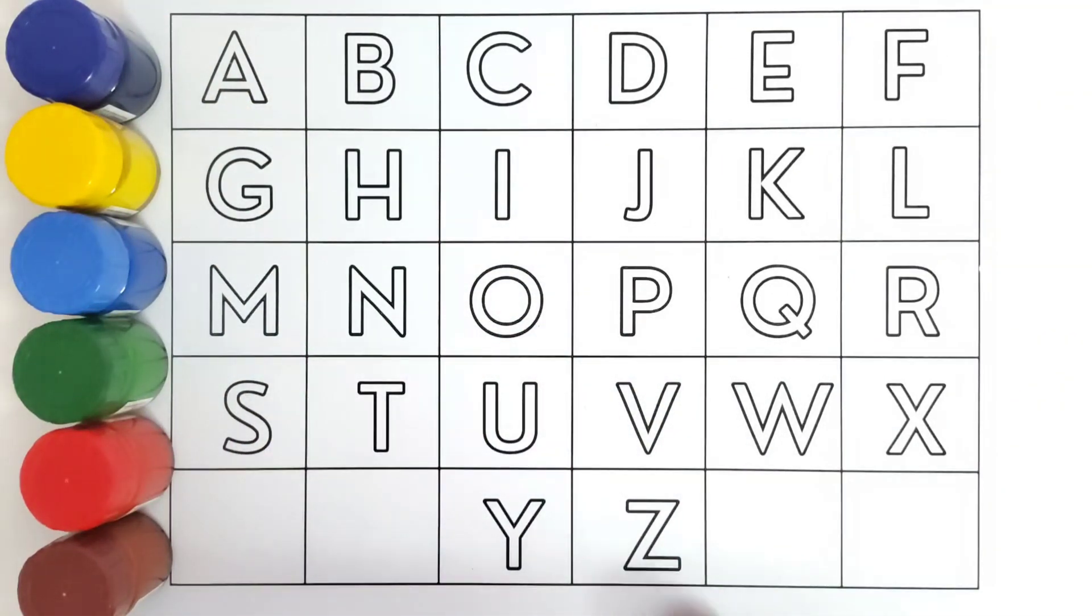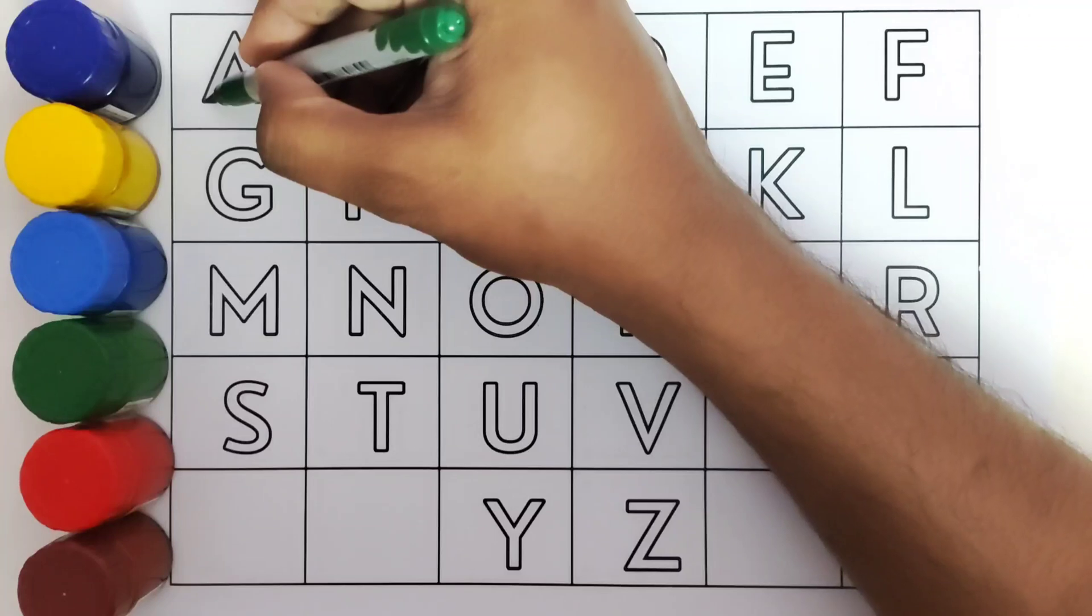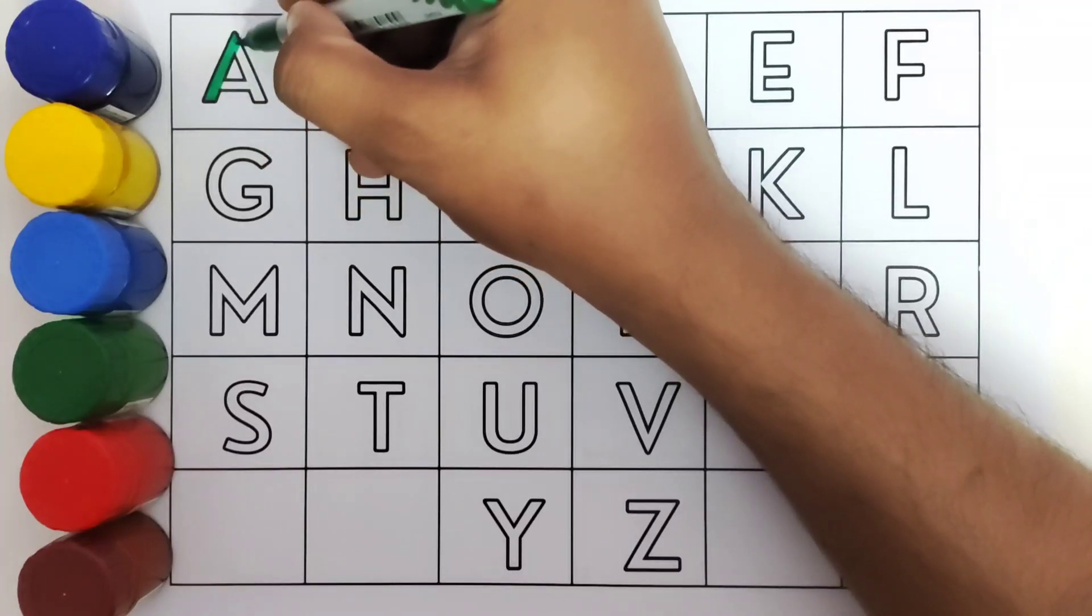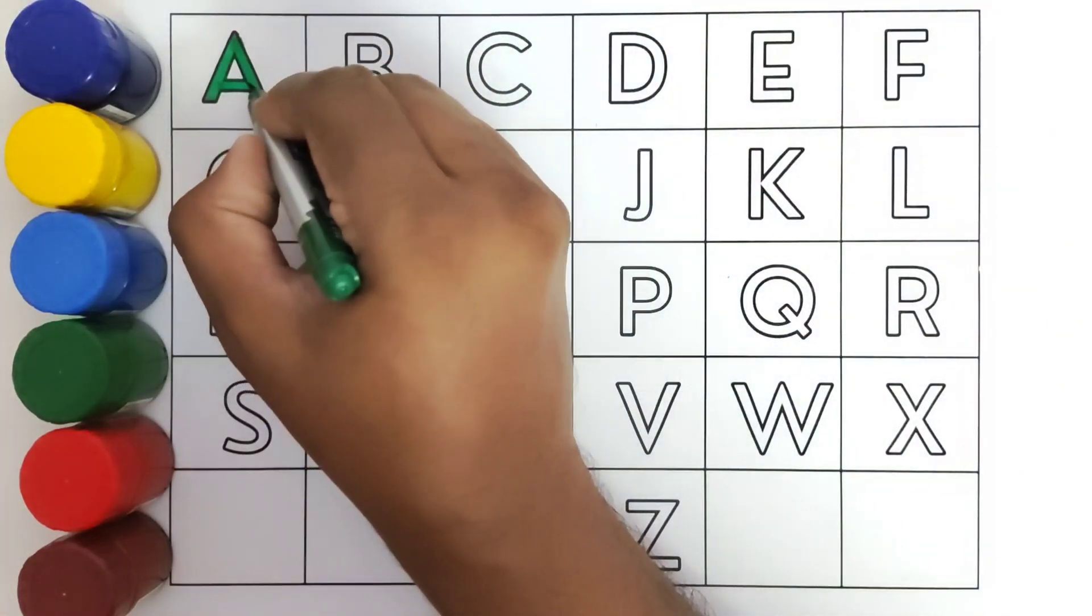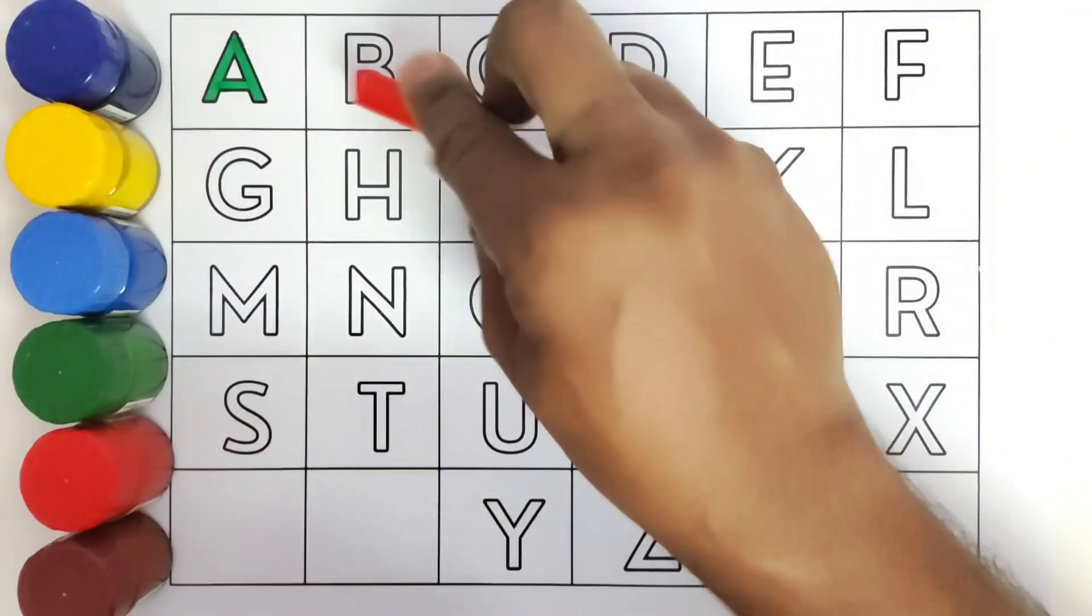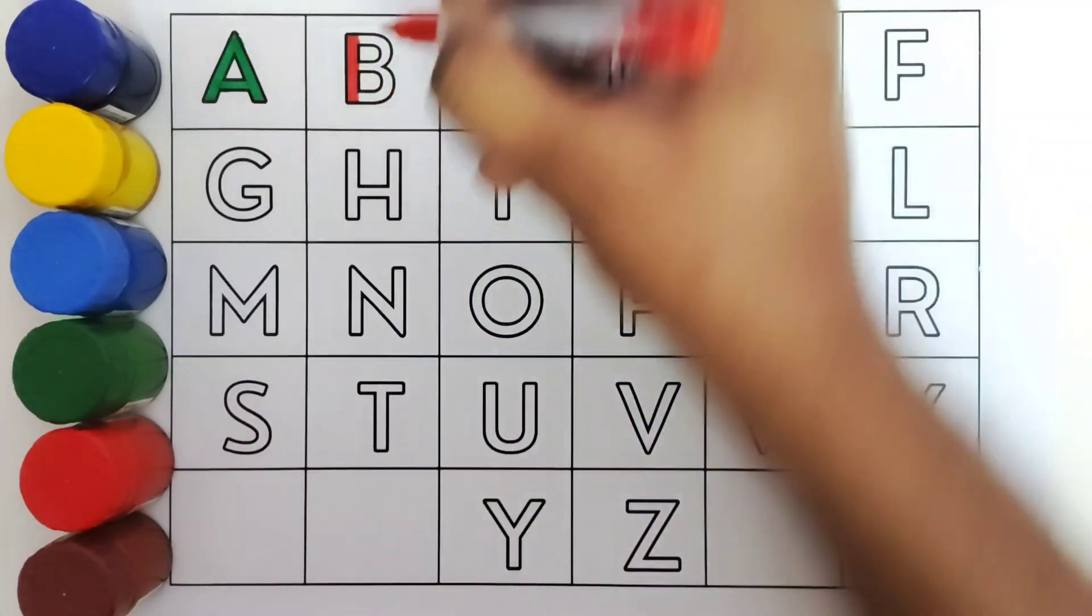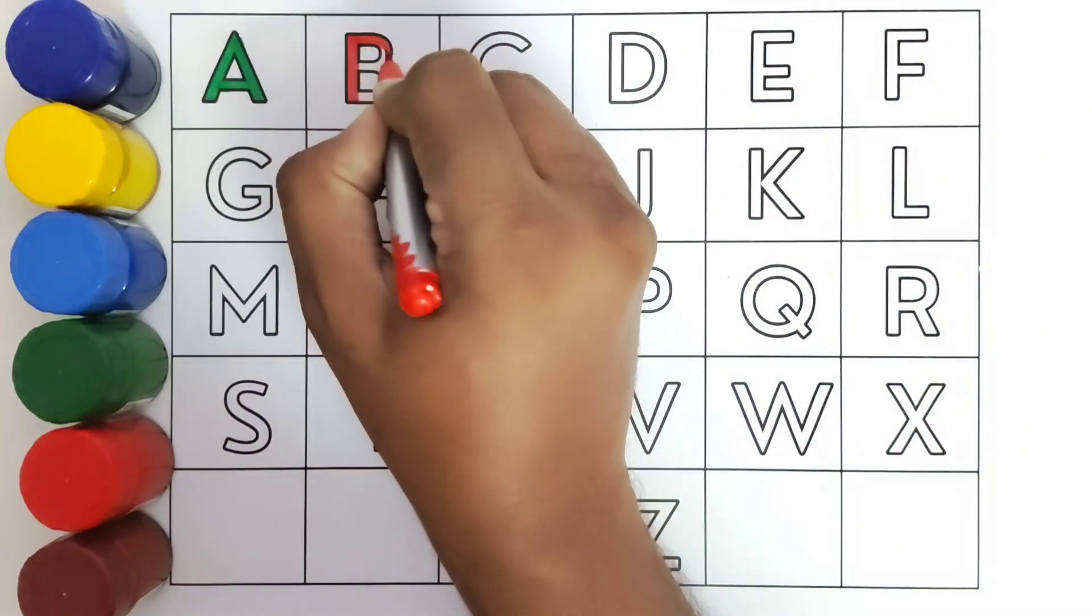This is A. A for apple, A for apple. This is B. B for ball, B for ball.